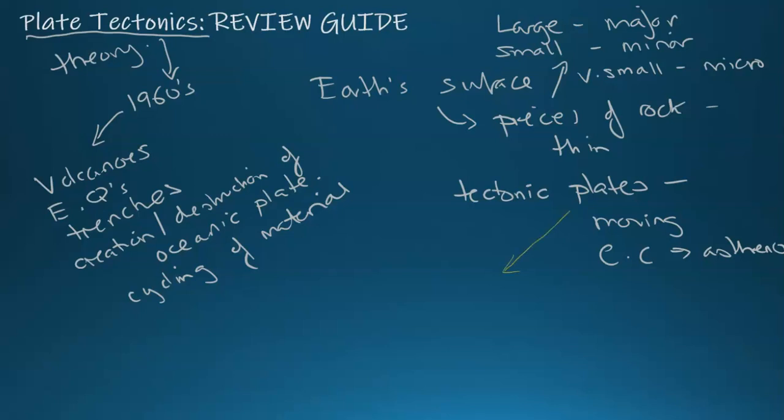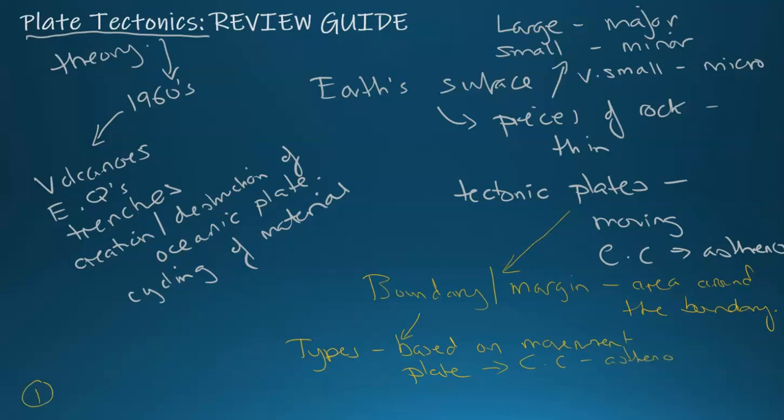So where these plates meet is called a boundary. Another word you can use is margin, but that's usually the area around the boundary. The boundary is where two plates meet. And there are different types of boundaries based on the movement, the movement of the plate, which again is initiated and produced by the convection currents in the asthenosphere. And the types are: there is divergent, there is convergent, and there is, third one is transform.